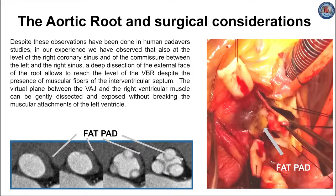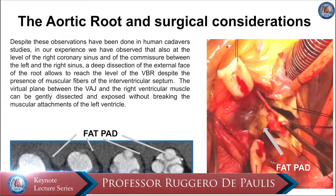Despite this observation, as demonstrated in human cadaver studies, in our experience we have observed that at the level of the right coronary sinus and the commissure between the left and right sinus, a deeper root dissection of the external face of the root is still possible in order to reach the level of the virtual basal ring, despite the presence of the muscular portion of the ventricular septum. The virtual plane between the ventricular-arterial junction and the right ventricular muscle, in most cases, can be gently dissected without grossly entering the muscular fibers of the left ventricle.